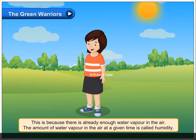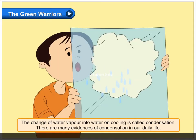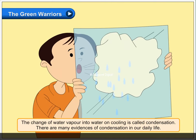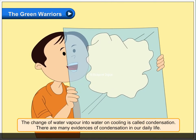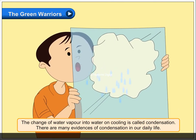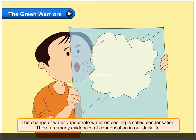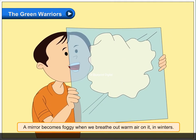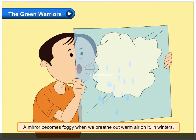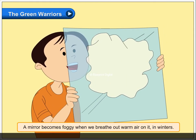The amount of water vapour in the air at a given time is called humidity. The change of water vapour into water on cooling is called condensation. There are many evidences of condensation in our daily life. A mirror becomes foggy when we breathe out warm air on it in winters.